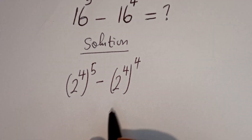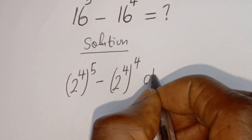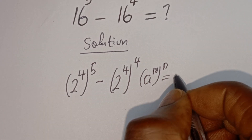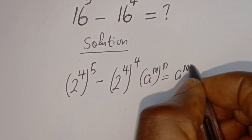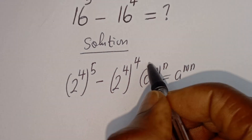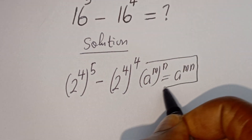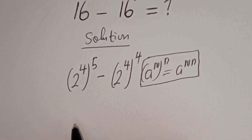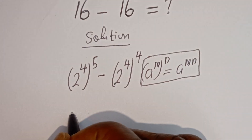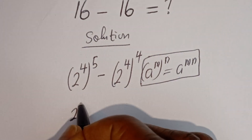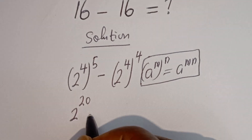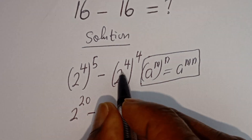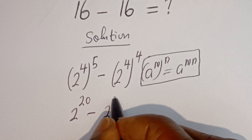Take note that if you have a to the power of m, to the power of n, this is equal to a to the power of m times n. So this can be written as 2 to the power of 4 multiplied by 5 — that is 20 — minus 2 to the power of 4 multiplied by 4 — that is 16.